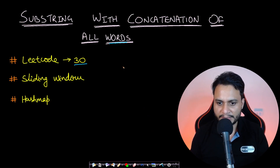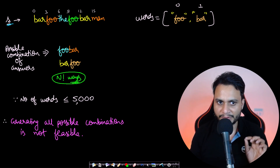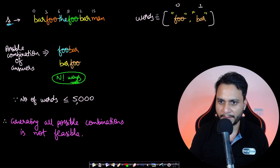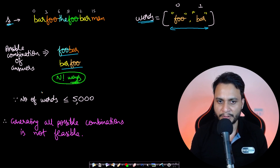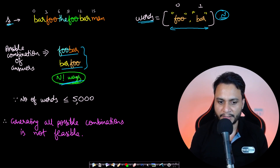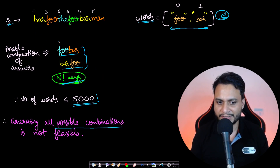Let's look at an example. The given string is shown on the left, with some indices marked — the first character is index 0. On the right we are given two words. We need to form a substring using these words in any combination, so the possible combinations are 'foo bar' and 'bar foo'. If there were n words, the number of combinations could be up to n factorial. With the constraint that words can be up to 5000, generating all combinations and doing pattern matching is not feasible.